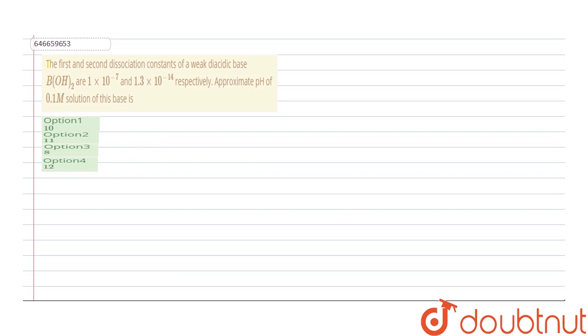are going to see a question about the first and second dissociation constants of a weak dibasic acid. The dibasic acid is given as B(OH)₂, and the first and second dissociation constants are 1×10